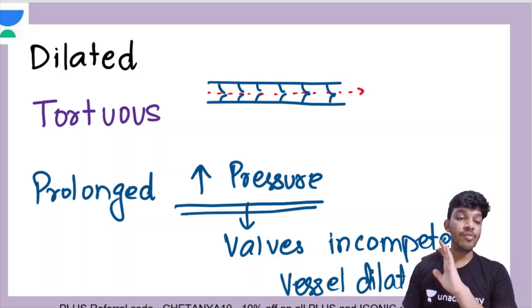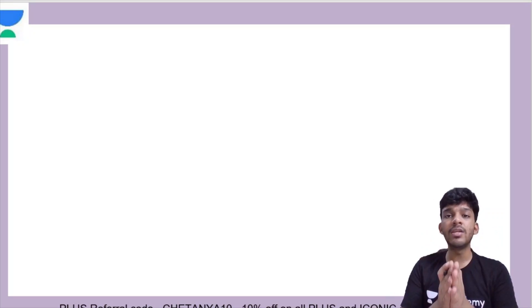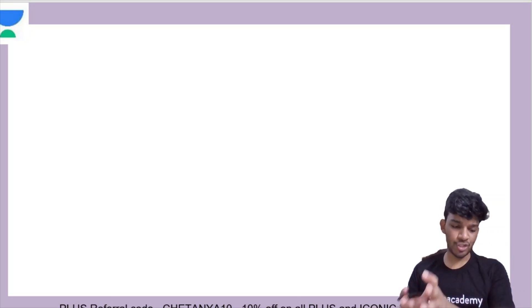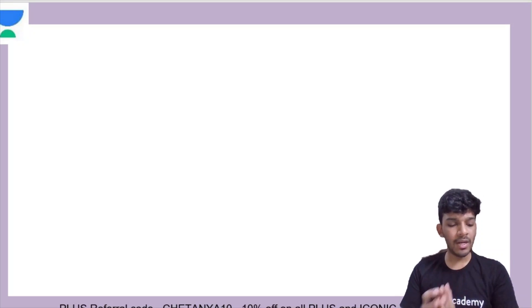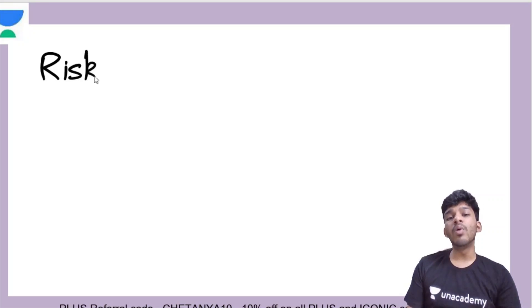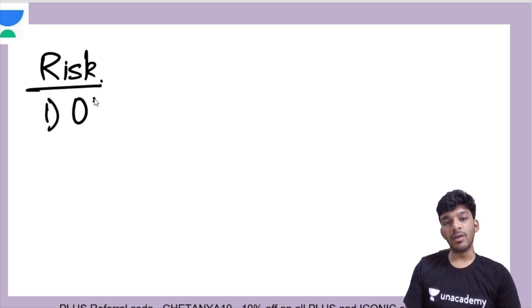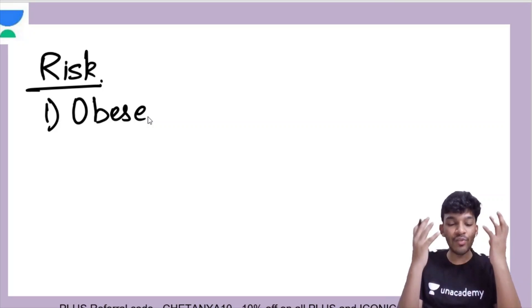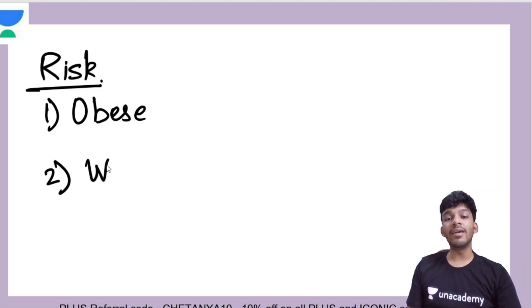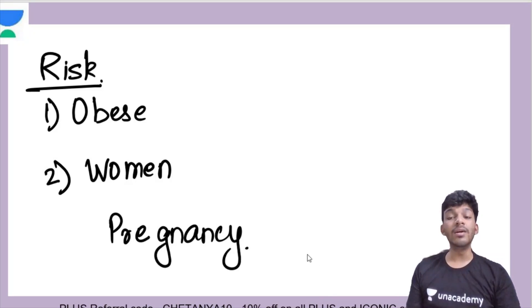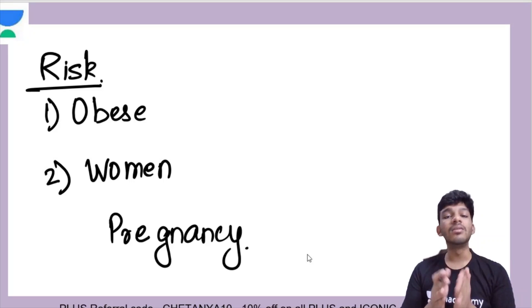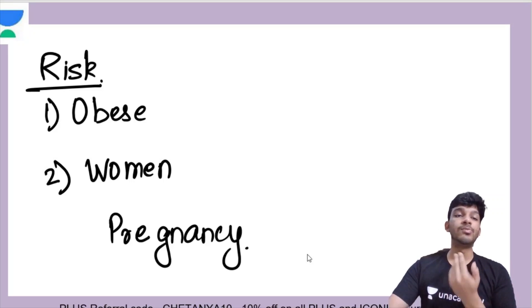Varicose veins is a very common condition, and the main reason is an elevation in pressures, mainly due to a prolonged standing posture. It is more common in women. The risk factors include: first, obese people — when they stand, their weight pushes blood down, so obesity is a risk factor. Second, it is higher in women because during pregnancy the uterus compresses on the iliac veins and the inferior vena cava. There are also certain genetic factors which have a predisposition with varicose veins.